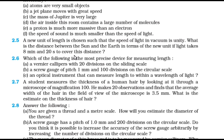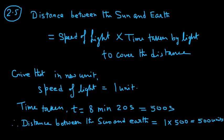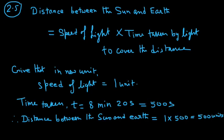Let us see the next question. Question 2.6: Which of the following is the most precise device for measuring length? A) A vernier caliper with 20 divisions on the sliding scale. B) A screw gauge of pitch 1 mm and 100 divisions on the circular scale. C) An optical instrument that can measure length to within the wavelength of light. So let us see the solution here.